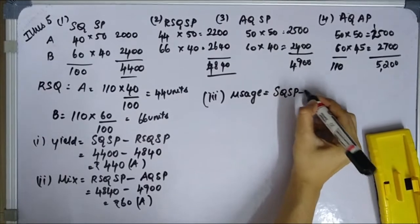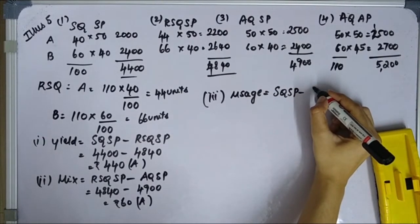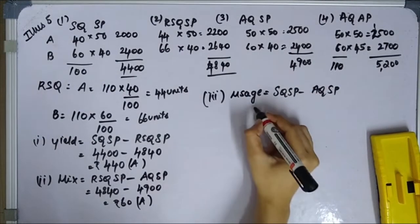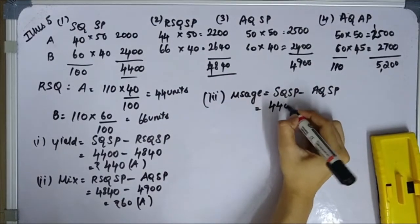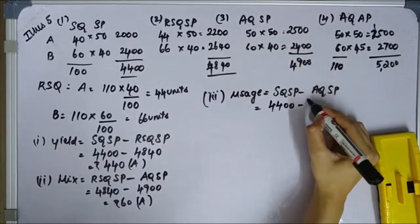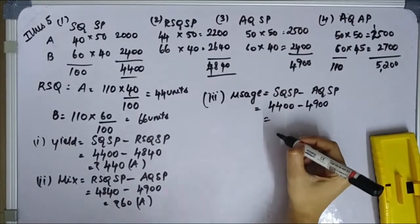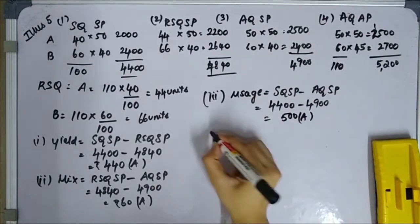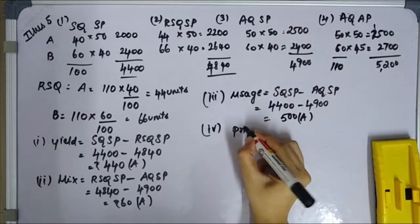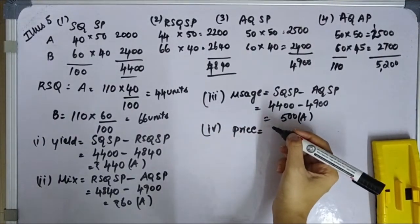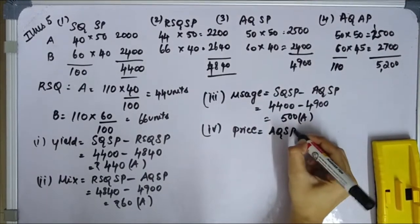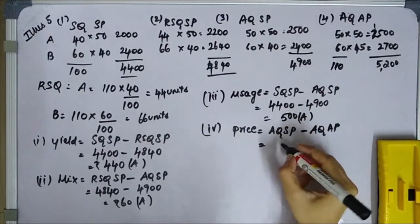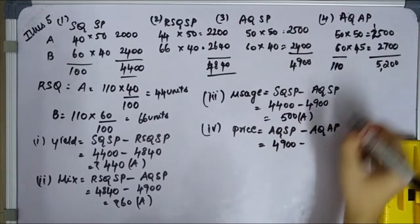Third variance: Material Usage Variance = SQ×SP minus AQ×SP = 4,400 minus 4,900 = 500 rupees Adverse. Fourth variance: Material Price Variance = AQ×SP minus AQ×AP = 4,900 minus 5,200 = 300 rupees Adverse.